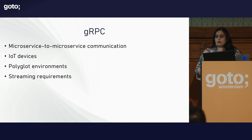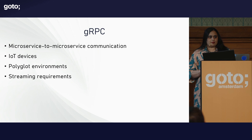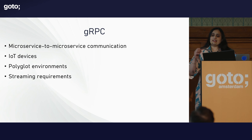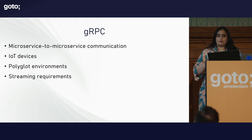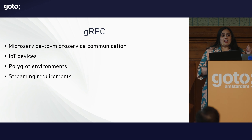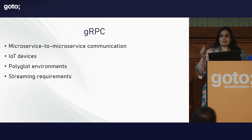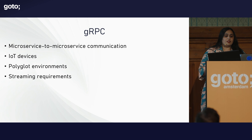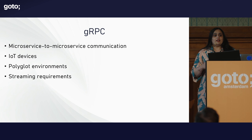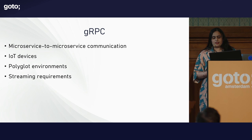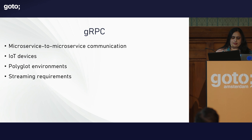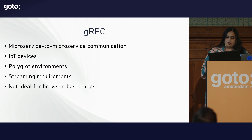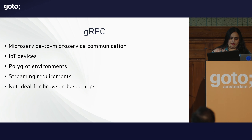Where is gRPC used? Microservice-to-microservice communication — how can one service get data from another most efficiently and in the most performant way? That's where gRPC comes in. IoT devices, polyglot environments when you want to support multiple languages and frameworks, and streaming requirements are all good use cases. However, gRPC is not the ideal candidate for browser-based apps — we'll talk about that briefly.